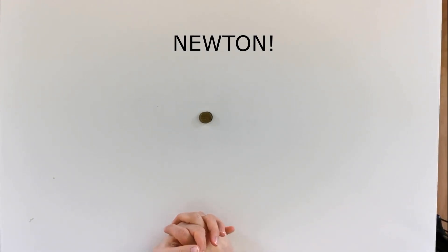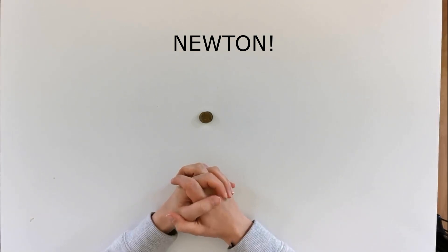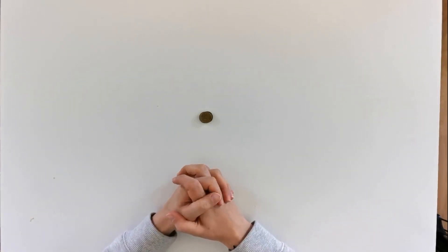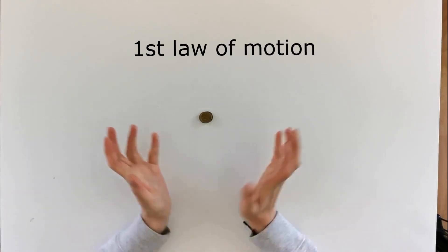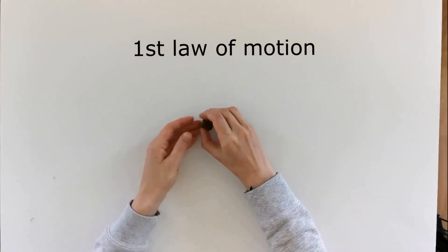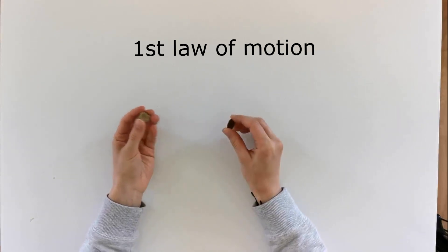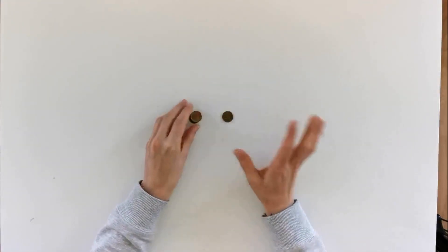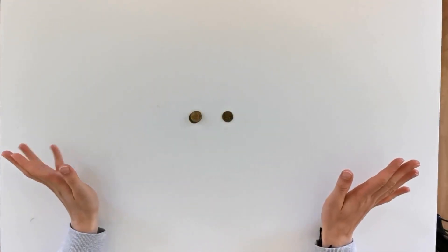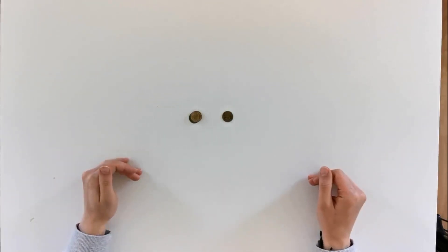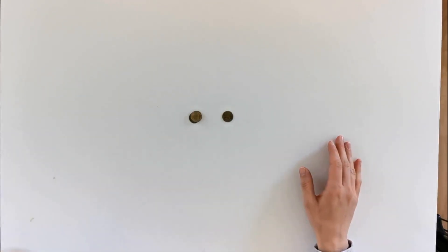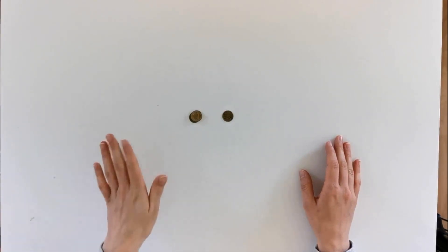Newton was a very smart person and he's got some laws about motion. In his first law of motion, he stated that when an object stays at rest, it stays at rest. When the object moves, it moves, unless there is something outside, some outside force that acts on it.